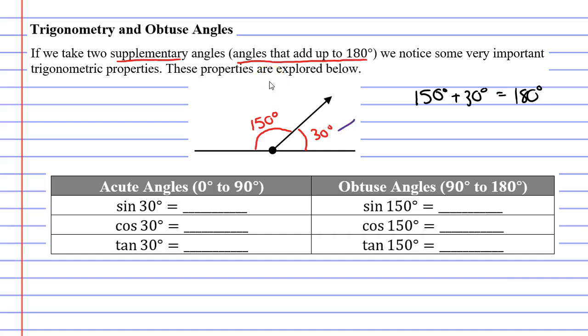The 30 degree angle is called an acute angle. An acute angle is an angle that is between 0 to 90 degrees. Quite often we remember them as being cute or small angles.